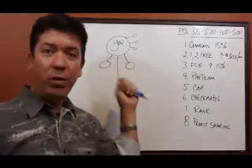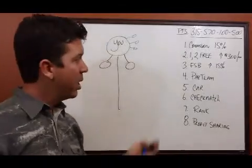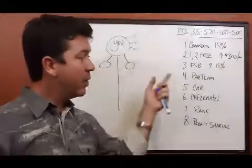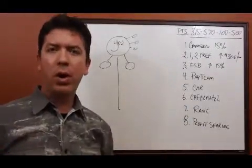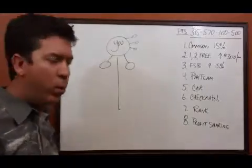So commission, free product, and fast start bonuses are the first three ways we get paid. The fourth way we get paid is a paid team bonus. And just like the name of that bonus says, here's where we start to begin to earn money off building teams. Let me show you how it would work.